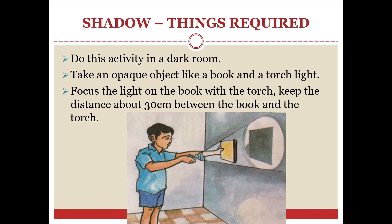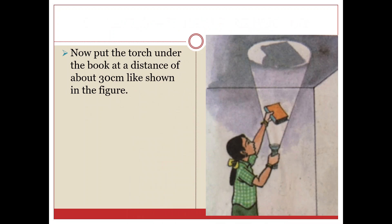Do this activity in a dark room. Take an opaque object like a book and a torch light. Focus the light on the book with the torch, keeping the distance about 30 cm between the book and the torch. Now put the torch under the book at a distance of about 30 cm as shown in the figure. We were able to see the shadow on the wall as well as on the roof.